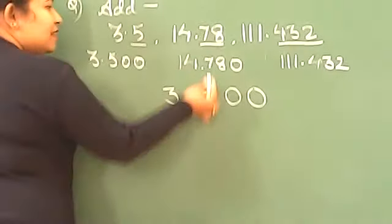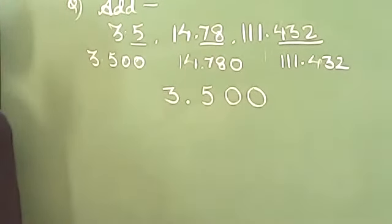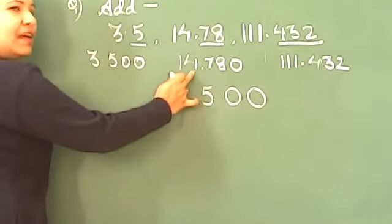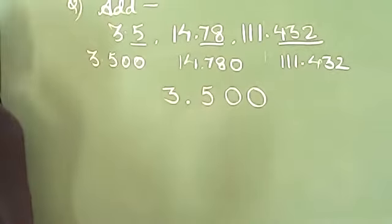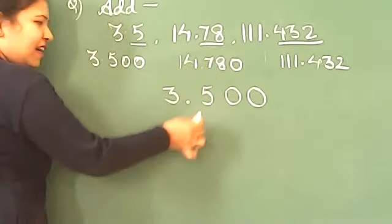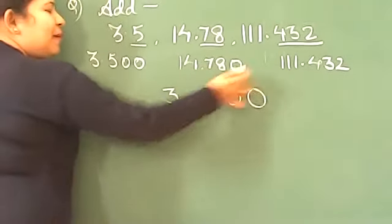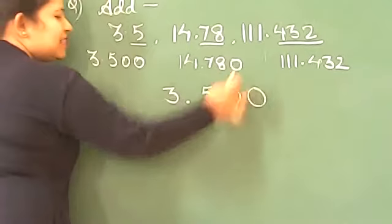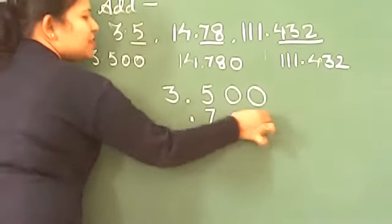Now see, please understand all of you look at here. Don't write right now. Now second number is very important how we place it. Do not write anything but understand it. Decimal below decimal. Now decimal place, after that 7, 8, 0.